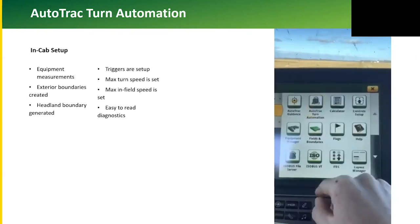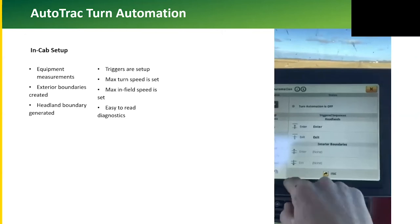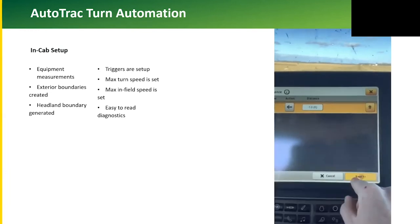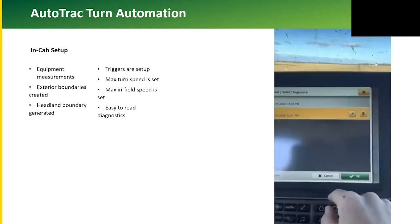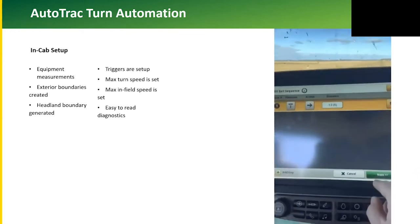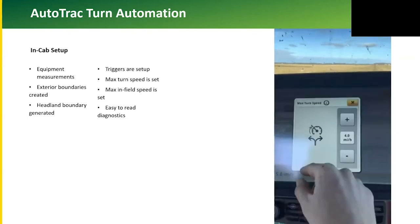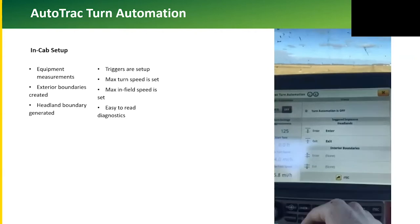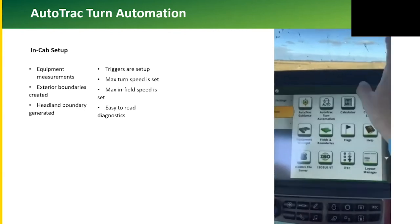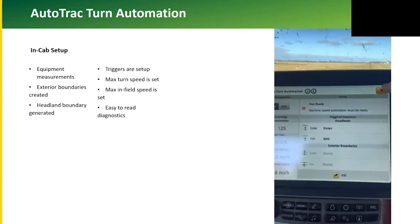Next, we will set up the triggers for entering and exiting the headland. In this video, we have set up SCV1 to raise and lower the implement. Then we'll set up our max turn speed and our max infield speed. Finally, we'll turn Autotrack turn automation on. We have a diagnostic scroll to make sure that everything is set up correctly.